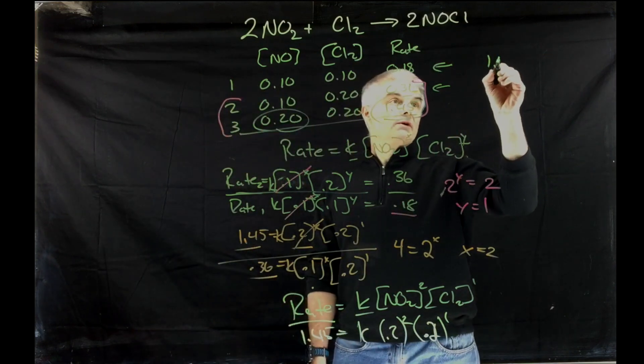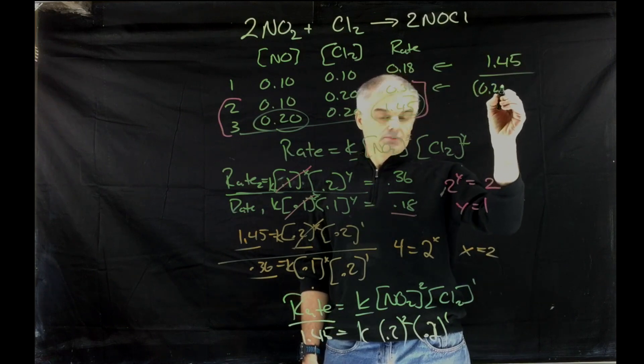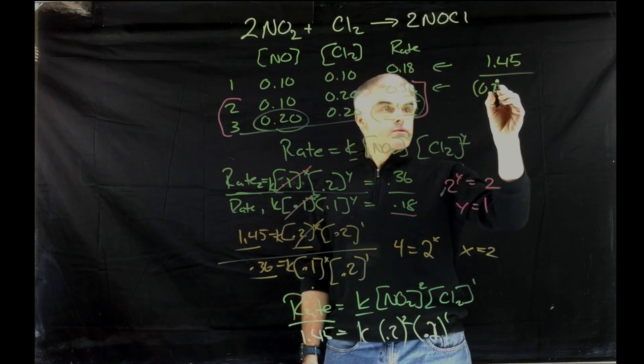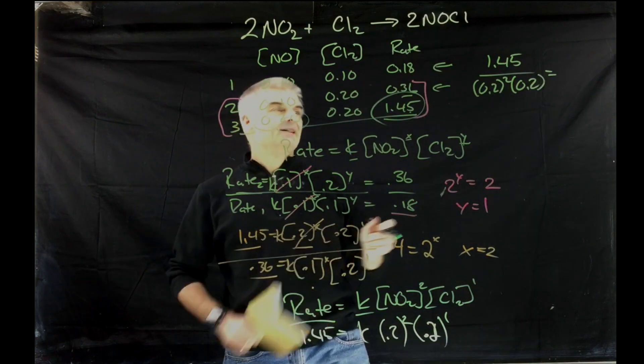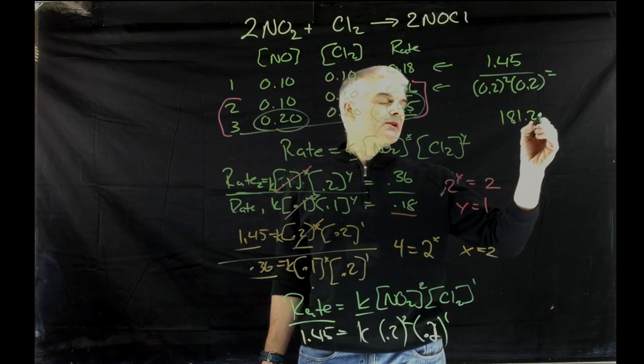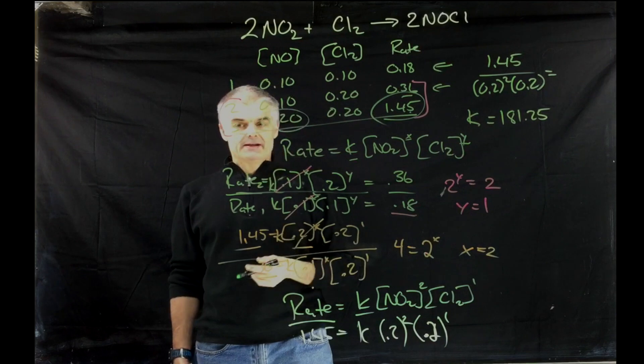And so you could take 1.45 divided by 0.2 squared divided by 0.2. When you divide this out, you get 181.25 is equal to the rate constant.